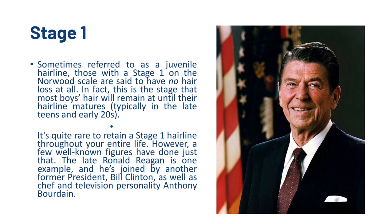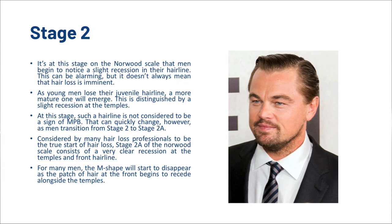Stage 2 is where men begin to notice a slight recession in their hairline. This can be alarming, but it doesn't always mean that hair loss is imminent. As young men lose their juvenile hairline, a more mature one will emerge, distinguished by a slight recession at the temples. At this stage, such a hairline is not considered a sign of male pattern baldness. It can quickly change however as men transition from stage 2 to stage 2a. Considered by many hair loss professionals to be the true start of hair loss, stage 2a consists of a very clear recession of the temples and front hairline, and the M shape will start to disappear.